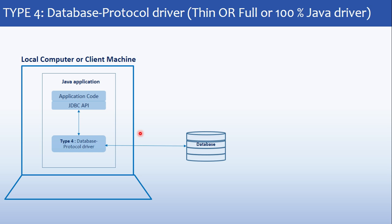This driver converts your JDBC calls directly into the vendor-specific database protocol, that's why it is called a database protocol driver. Whatever JDBC API calls you make, all those calls are converted by your database protocol driver into the database vendor-specific protocol so that your database can understand those protocols. It is also called a pure Java direct-to-database driver — direct to database meaning it is directly communicating to the database.